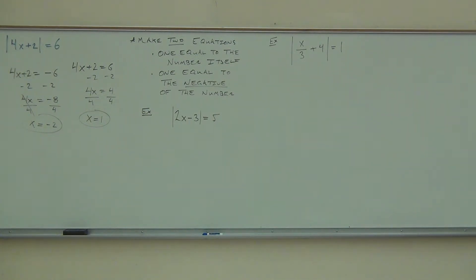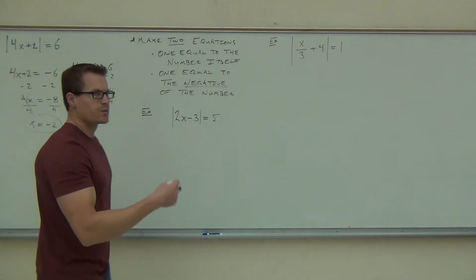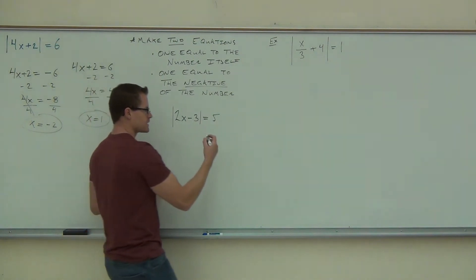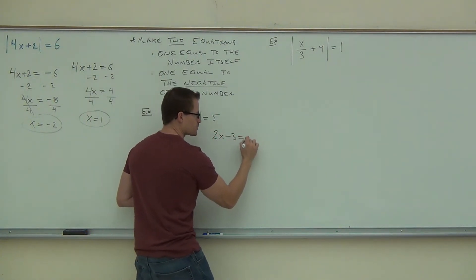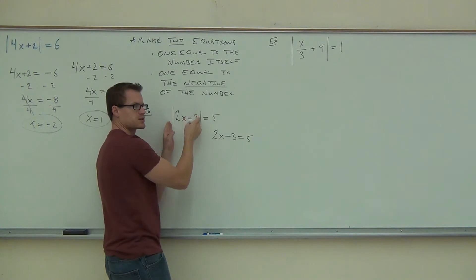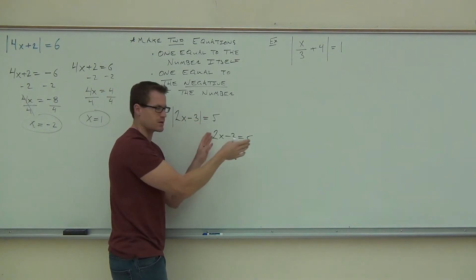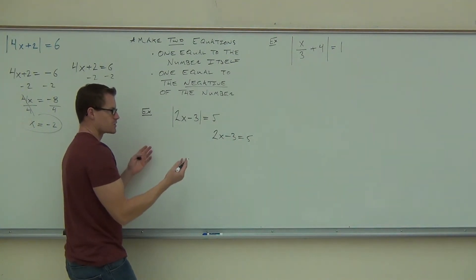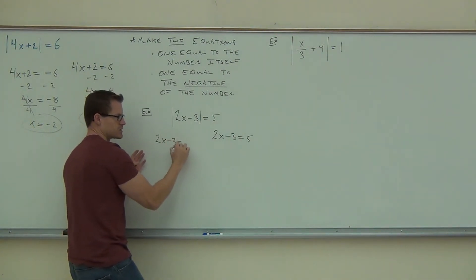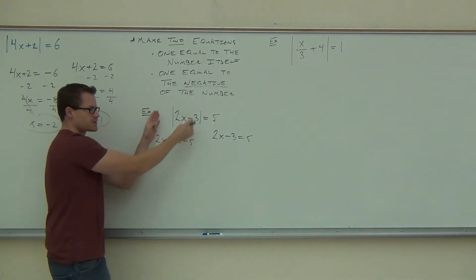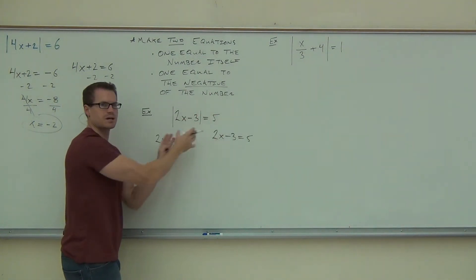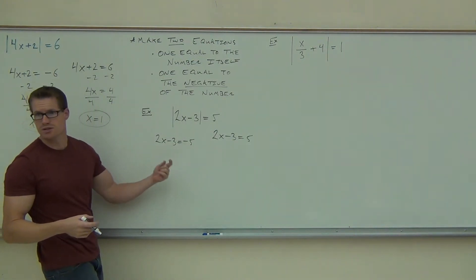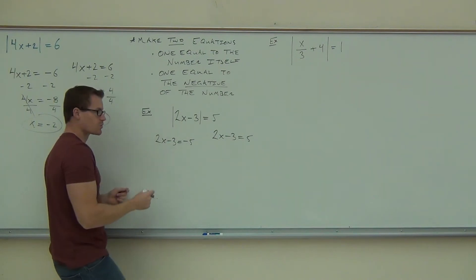We're going to start on the first one here. The way we look at this: absolute value equals a whole number. We know that if the inside of our absolute value, 2x minus 3, equals positive 5, the absolute value of positive 5 is going to give us positive 5. That's one equation giving us one solution. The other portion is that if 2x minus 3 equals negative 5, the absolute value of negative 5 is still going to give us positive 5. That's where we're getting these two equations. Solving each of these gives us our two unique solutions, and we'll plug them in to double-check.